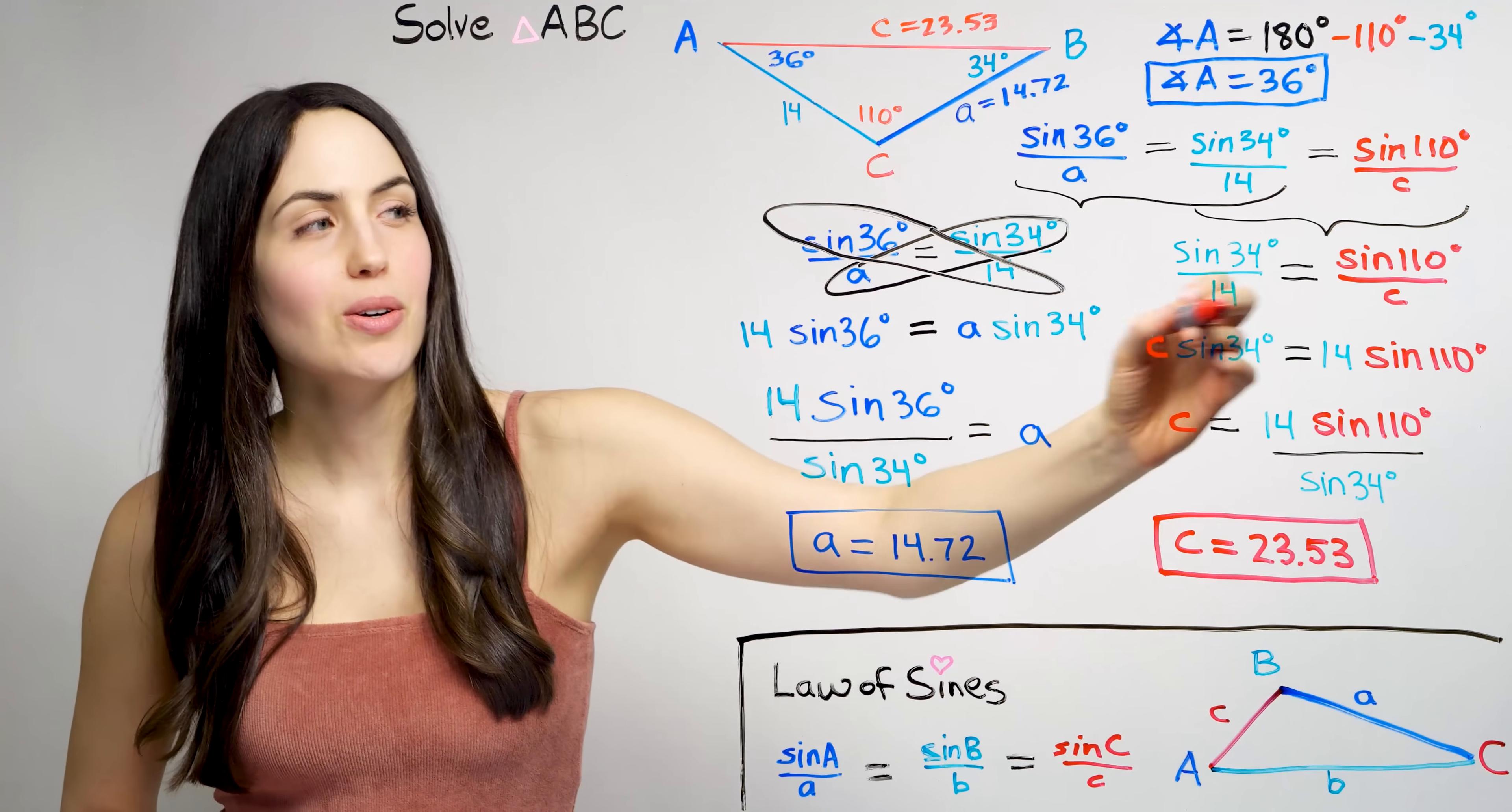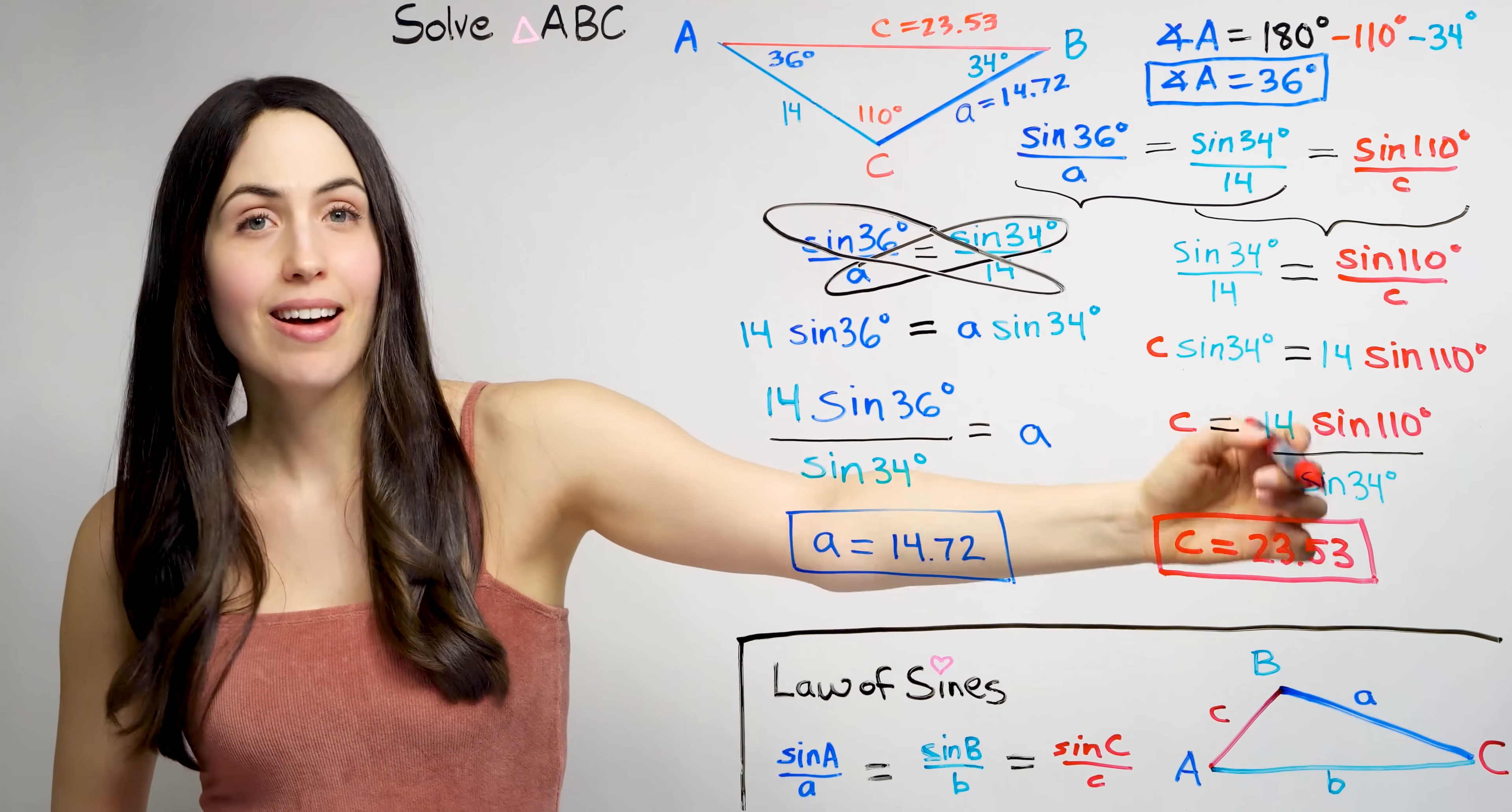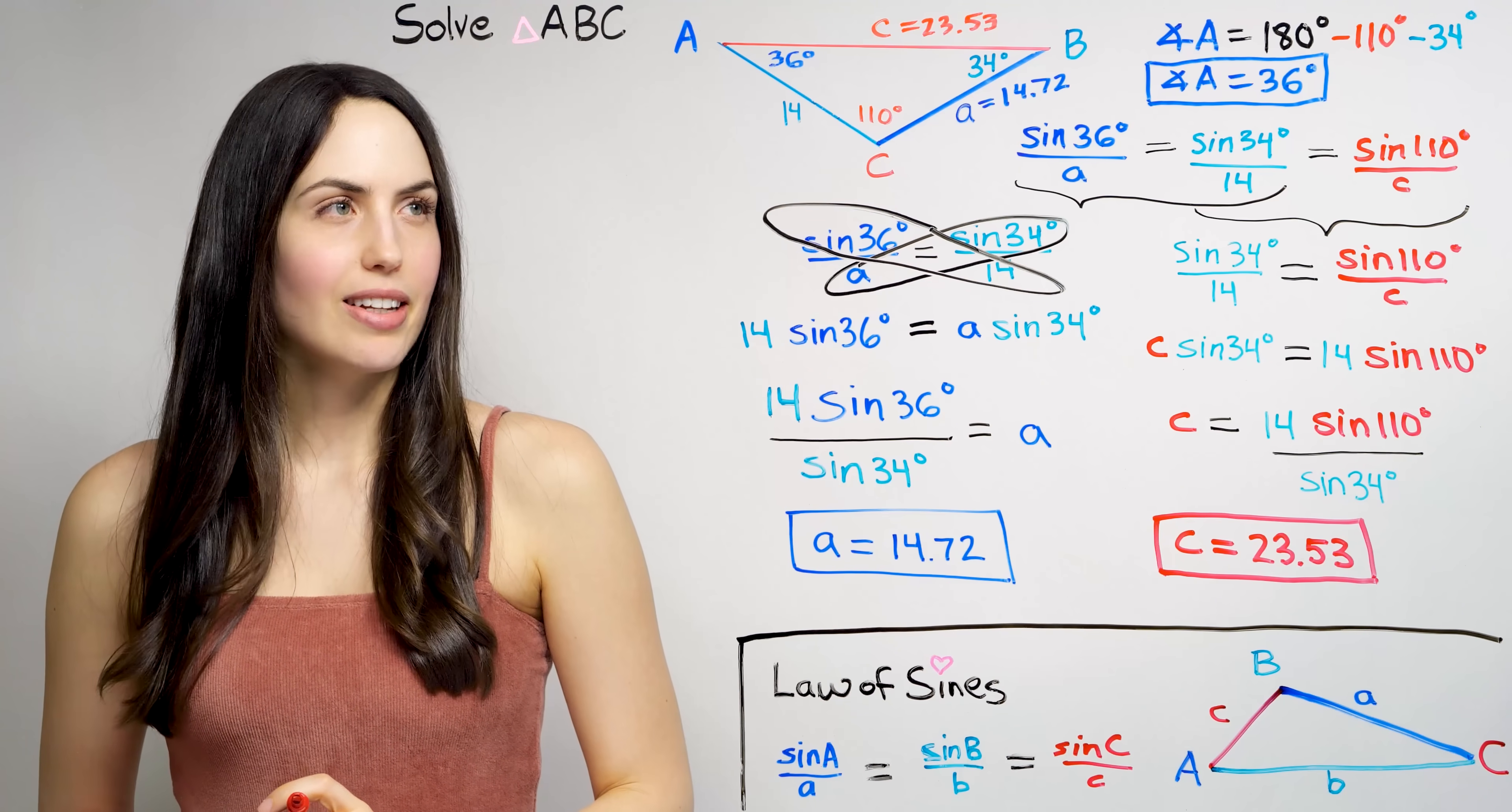So just like before, we cross multiply to solve. And we get this. A little deja vu for you, but we divide both sides by what we don't want here. So divide by sine 34 degrees. And when we put this in a calculator, we get that C is approximately 23.53 for that length. So now we've totally solved the triangle for all the missing sides and angles. Lovely.